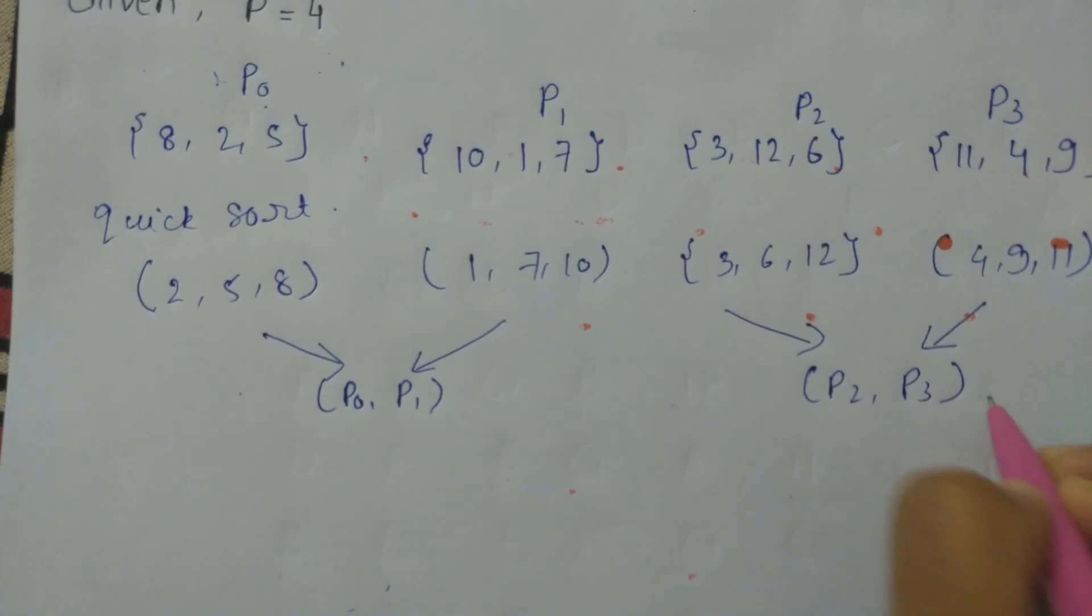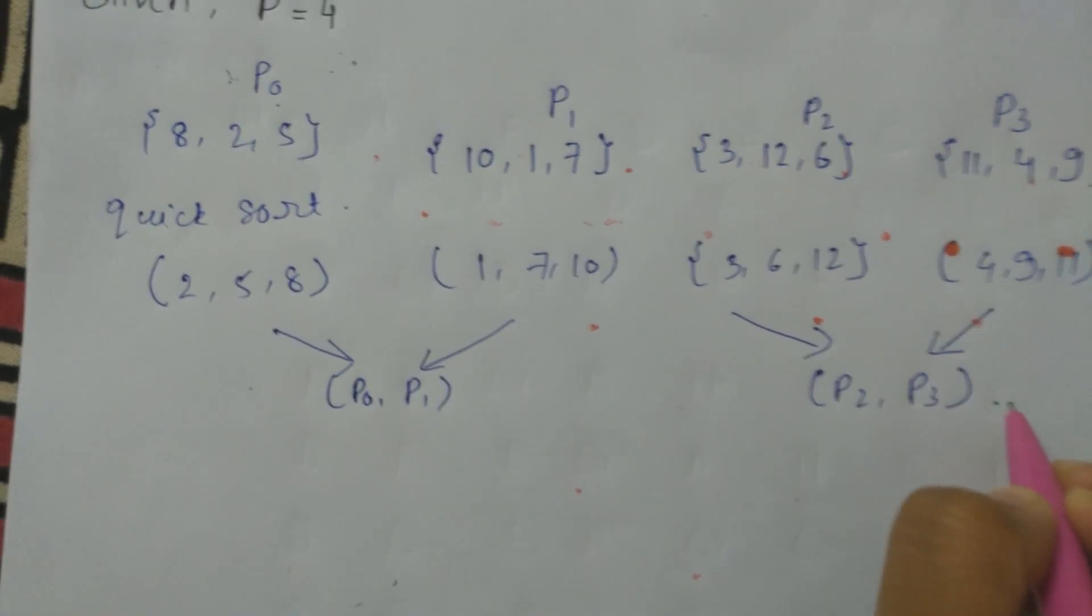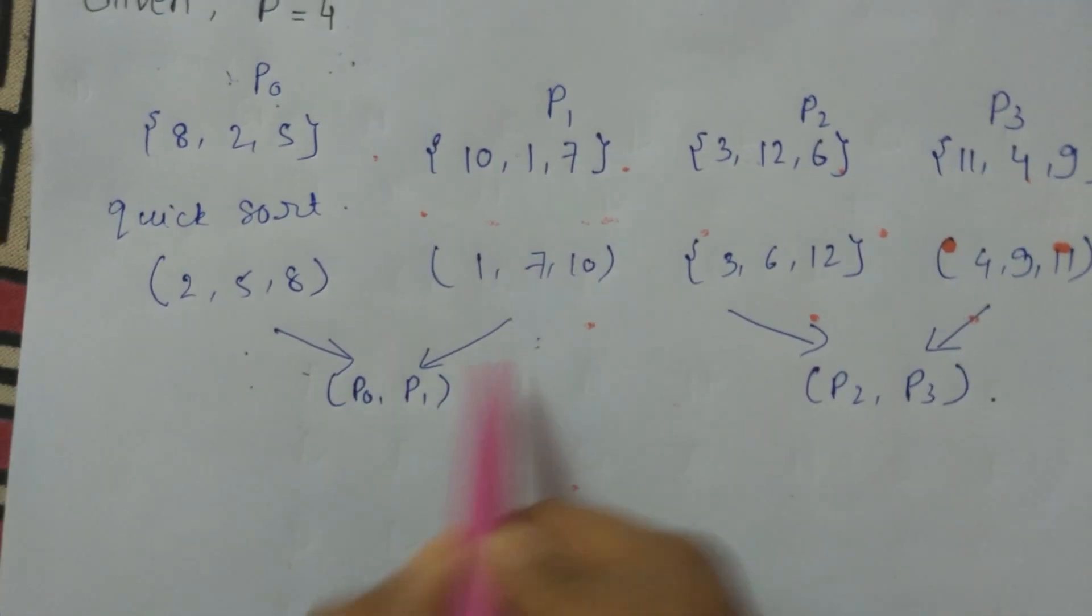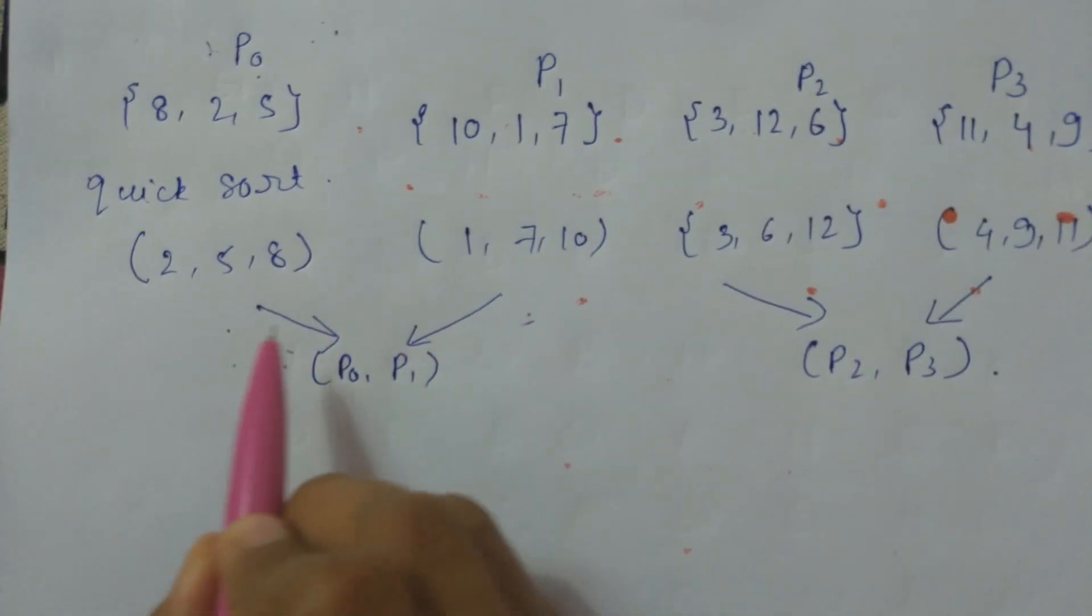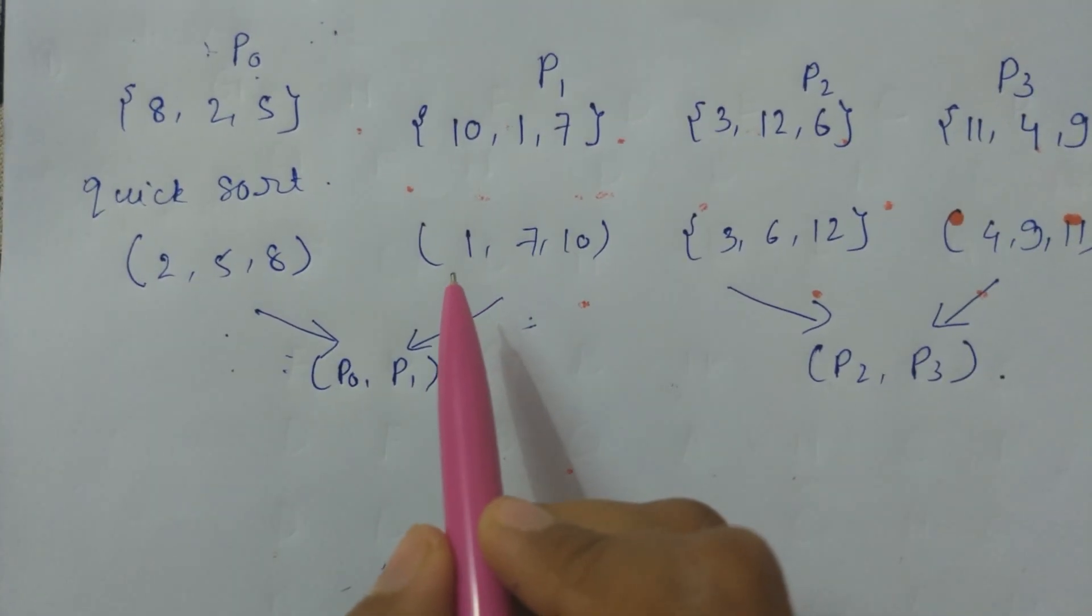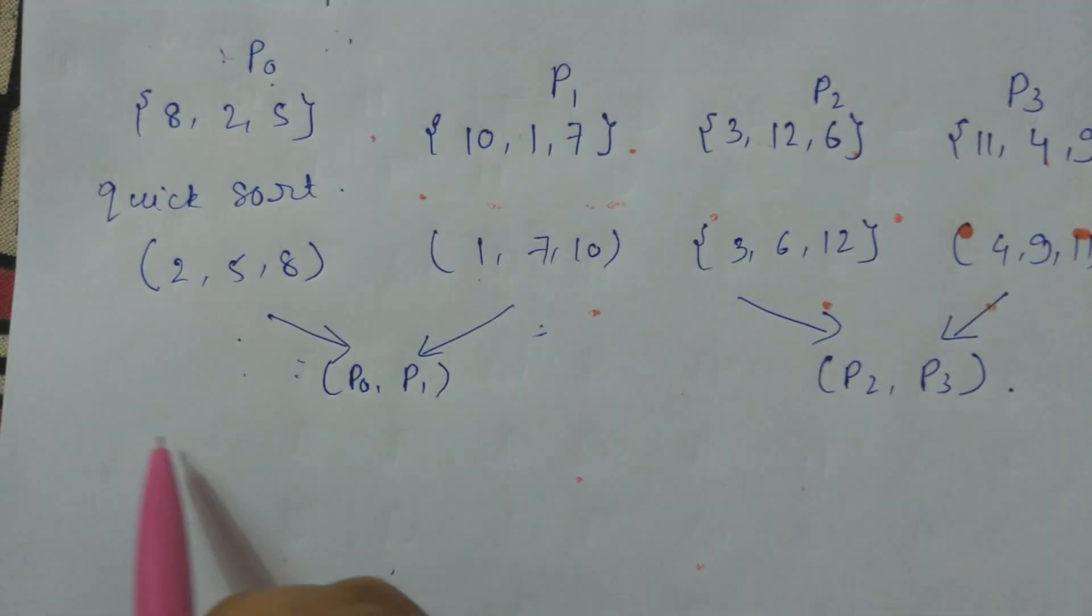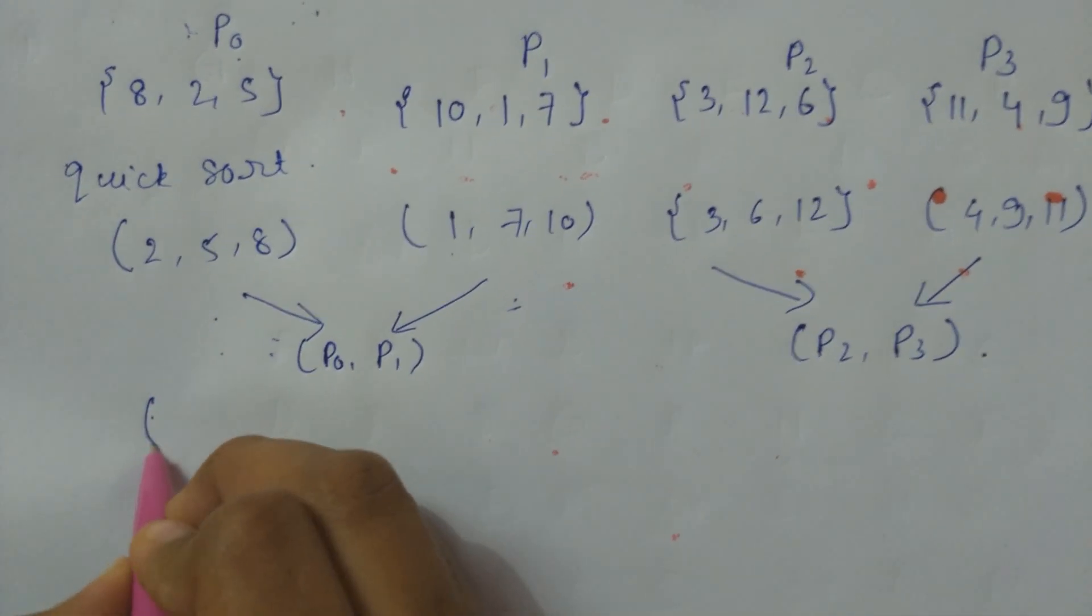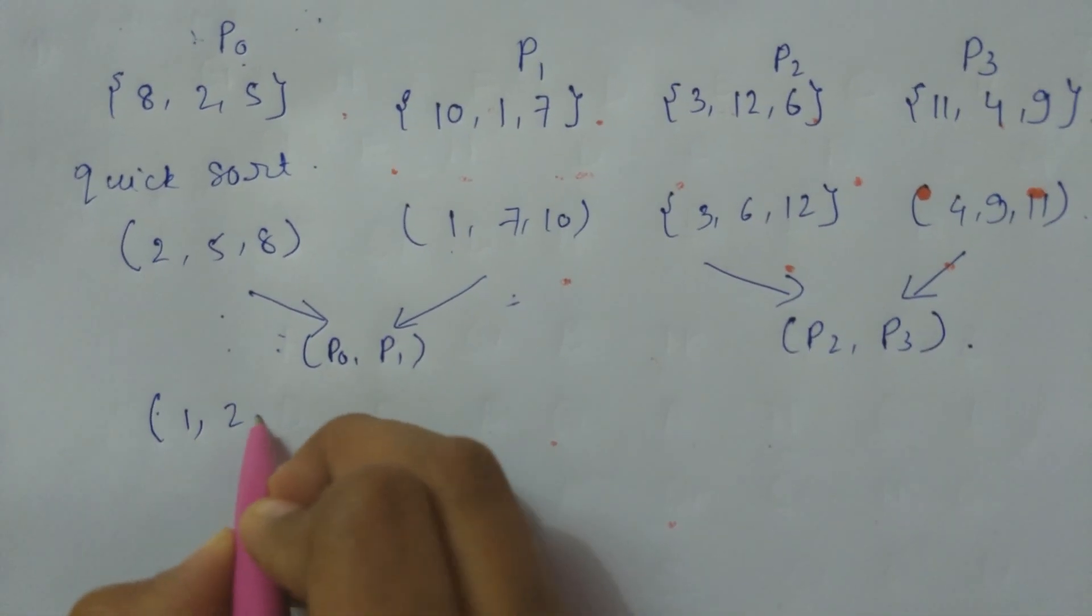Now we will get the answer by this combination. We will take the first three smallest numbers and write over here in P0 partition - that is, we will write 1, 2, 5 over here.